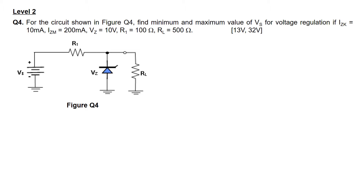For question 4, we are given the circuit as shown in figure Q4. In this circuit, we are supposed to find the minimum as well as maximum value for Vs. We are given the following parameters: Izk is 10 mA, Izm is 200 mA, Vz is 10 volts, the resistance of R1 is 100 ohms, and the resistance of RL is 500 ohms.